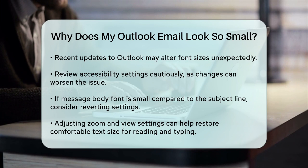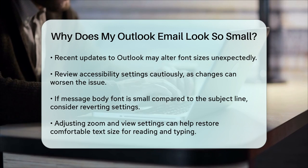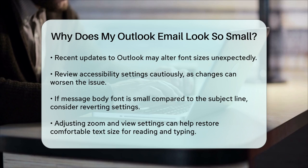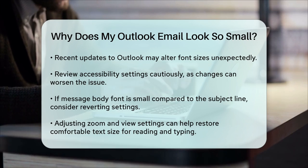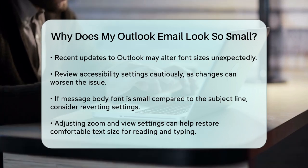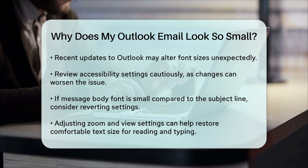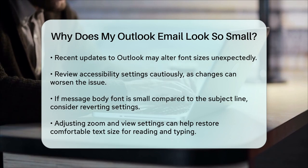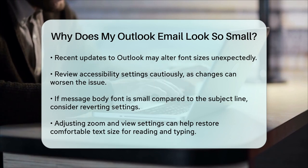In summary, if your Outlook emails look too small, it's likely due to the default zoom level or changes in the view settings. Adjusting the zoom level and checking the view settings should help you get the text size back to a comfortable level for reading and typing.